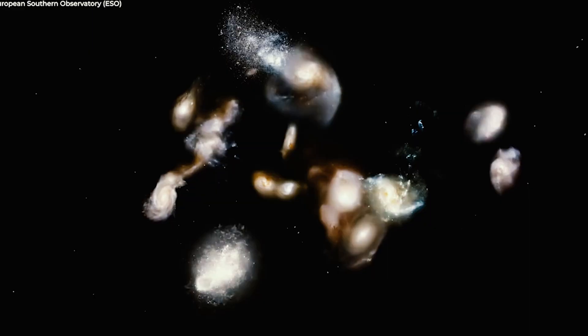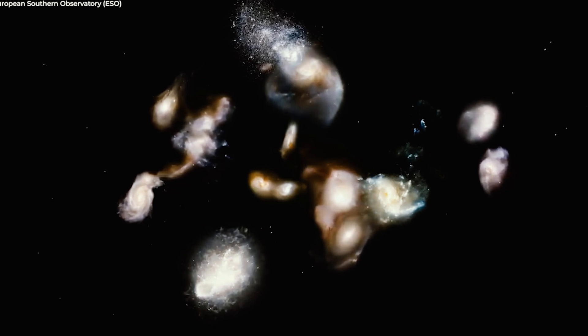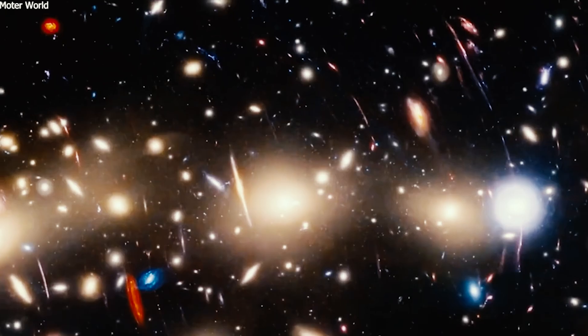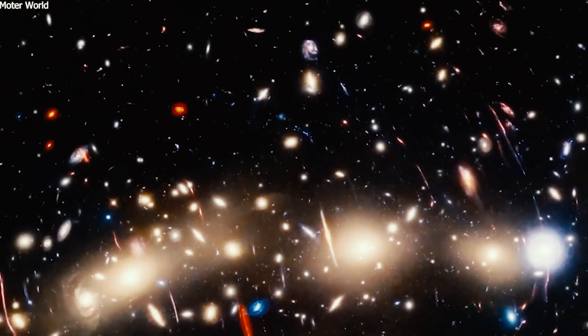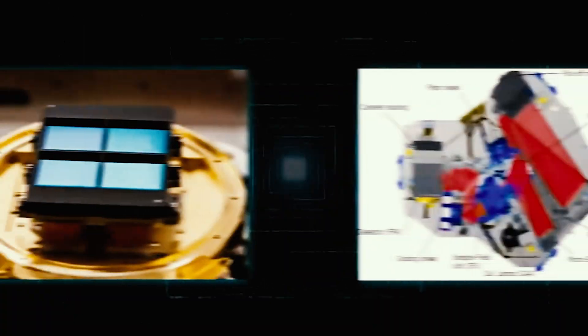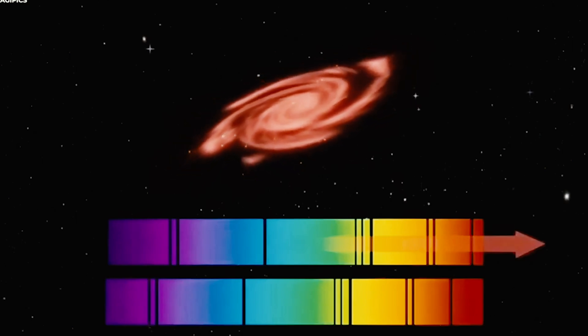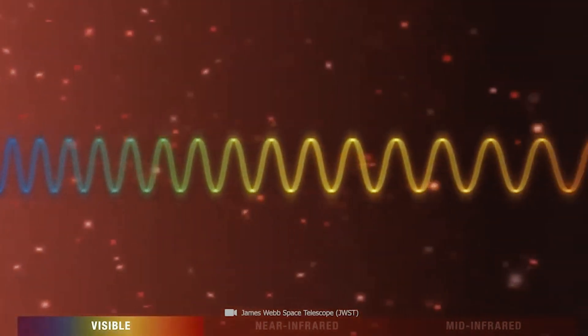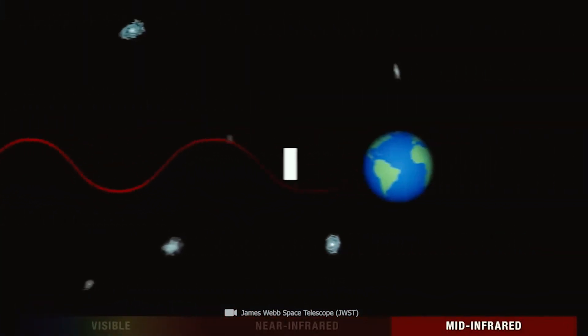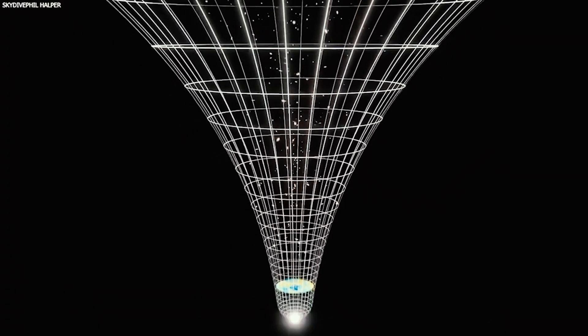Meanwhile, in 2023, Webb detected 15 strange galaxies that appeared to be older than the Big Bang itself. These galaxies were located in a region of the sky called the Hubble Ultra Deep Field, which is one of the most distant and faintest parts of the observable universe. Webb used its near-infrared camera and near-infrared spectrograph to measure the redshift of these galaxies, which is a measure of how much their light has been stretched by the expansion of the universe.